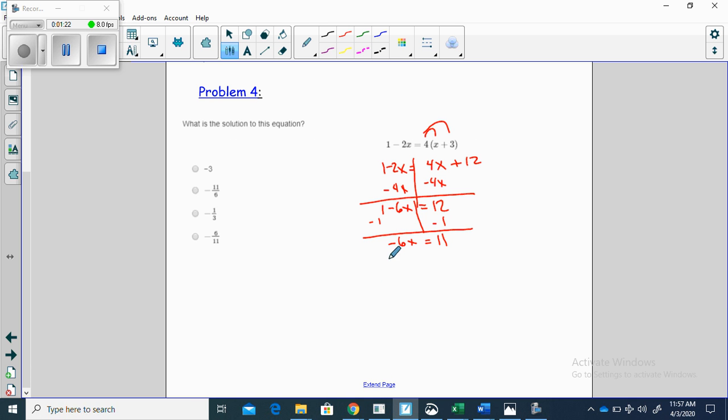Let's divide both sides by negative 6, and x is equal to negative 11 over 6.